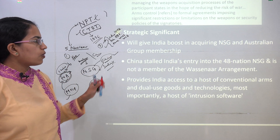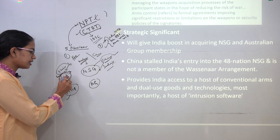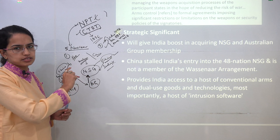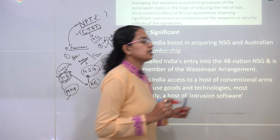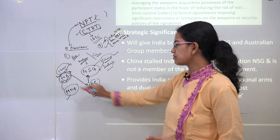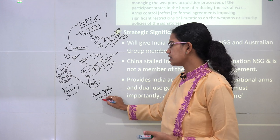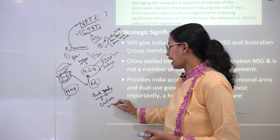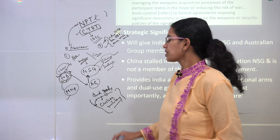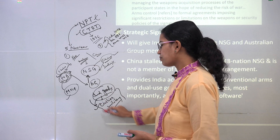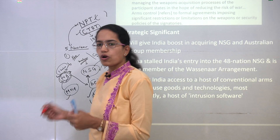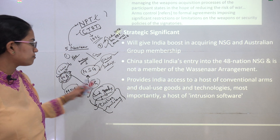Once India has membership in the Wassenaar Arrangement, it aims to get membership in the Australian Group, with the ultimate goal of entering the Nuclear Suppliers Group. India wants to enter these groups to gain a foothold on major technological developments — particularly dual-use goods and technology, which serve both civilian and military purposes. Since India is bordered by nations with nuclear weapons, it needs a strong hold on nuclear technologies.